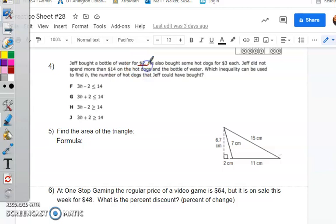So let's read this together. Jeff bought a bottle of water for $2. He also bought some hot dogs for $3 each. Jeff did not spend more than $14 on the hot dogs and the bottle of water, which inequality can be used to find H, the number of hot dogs that Jeff could have bought. So a couple of ways that you can start this. If this were me, I would assume, even though that's not what it says, just to make sense of it for me, that he did not spend more than $14. So let's say that the most that Jeff has is $14. That's why you're seeing that as the end point of this. He cannot spend more than $14. He can spend $14, which is why on each of these you see an equal sign. Just something to look out for.